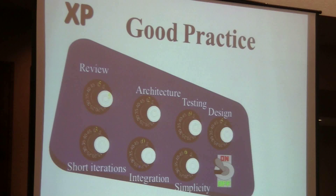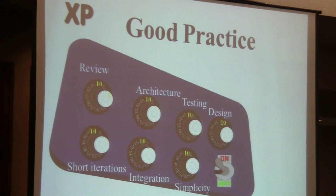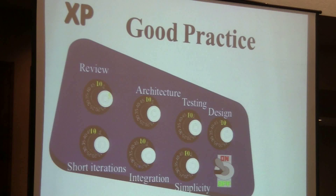Good practice includes all of these: review, architecture, testing, design, short iterations, integration, and simplicity. We sort of always adjust these things, but with XP, you turn everyone up to full volume — you really work through the architecture, the testing, etc., at full capacity all the time. Because when you're doing short iterations, you can do that. With a big project you have to defer: I'll do the review later, I'll do testing later, the design was done up front.